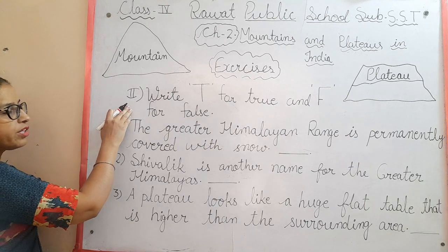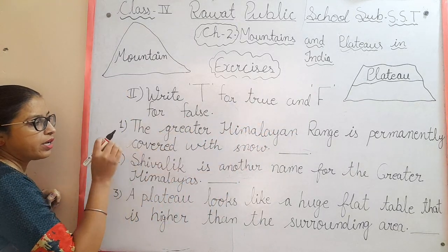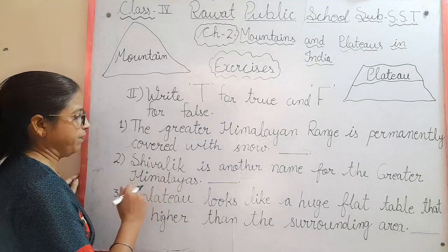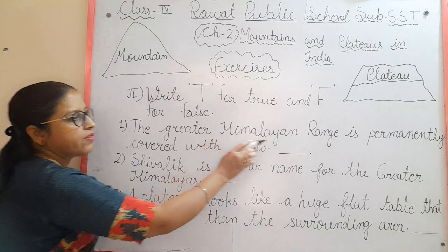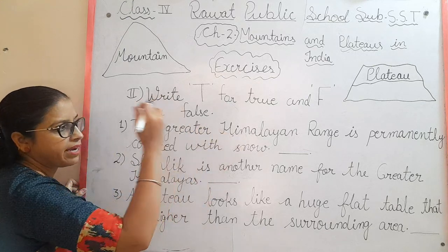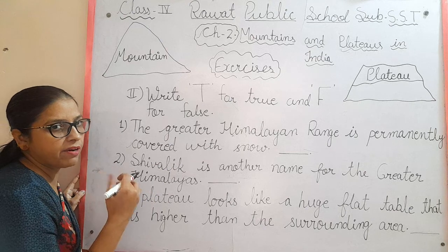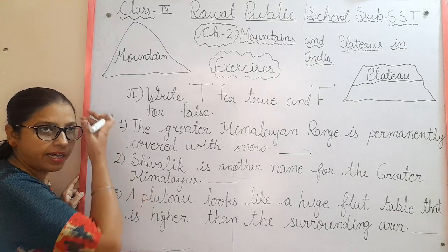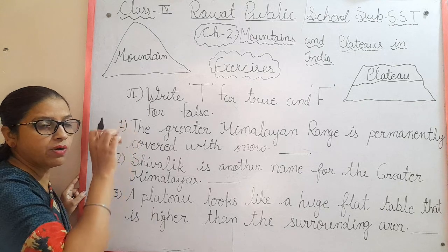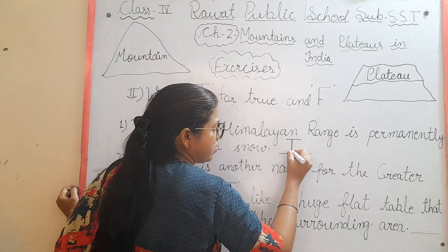Second question: write T for true and F for false. If the sentence is right, write true; if wrong, write false. First statement: 'The greater Himalayan range is permanently covered with snow.' The greater Himalaya is the topmost range and it is made of snow and ice, so yes, it is covered with snow. It is true.